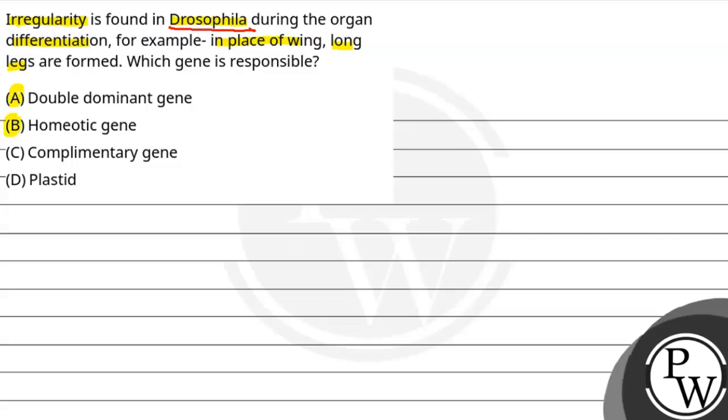homeotic gene, complementary gene, and last we have plastid. So first of all, let us see the key concept. The key concept